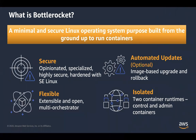BottleRocket is a minimal and secure Linux operating system that's been purpose-built from the ground up for running containers. It's secure by design and follows some of the best practices for container security. It only includes the tools needed to run containers, significantly reducing the attack surface and impact of vulnerabilities. By virtue of being minimal, nodes running BottleRocket have a fast boot time, enabling clusters to scale quickly with varying traffic patterns or workloads. Customers can always have the latest version of the OS running on their hosts with minimal effort.